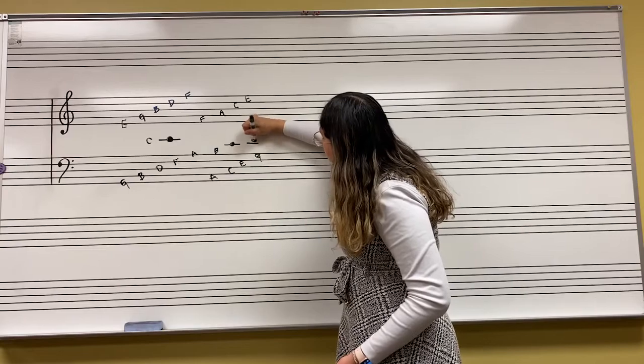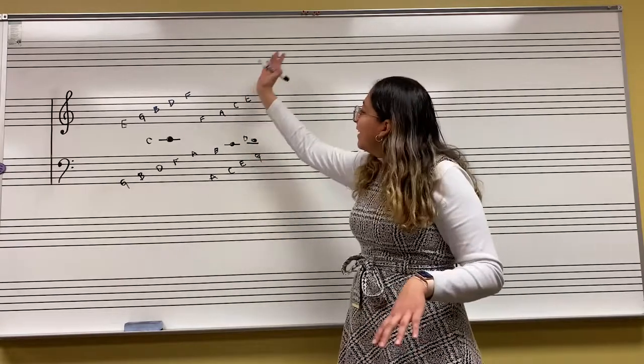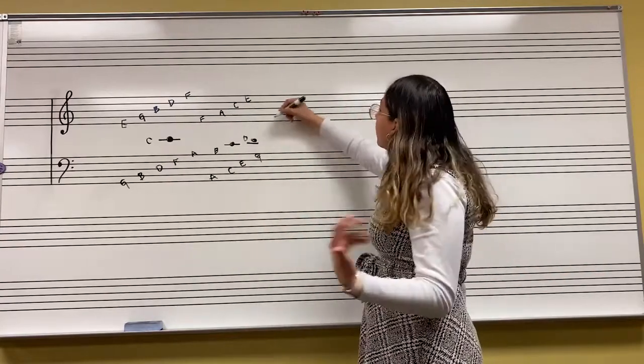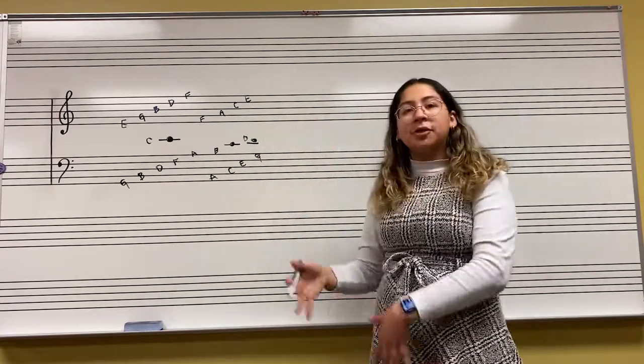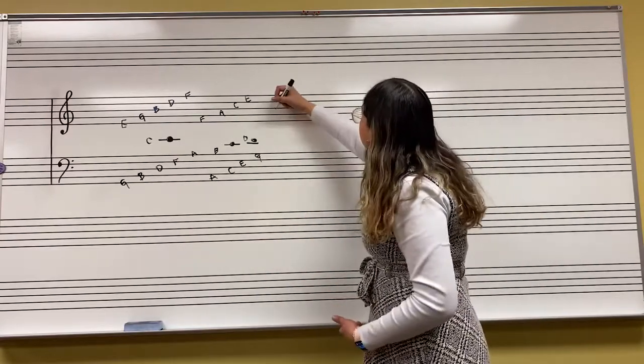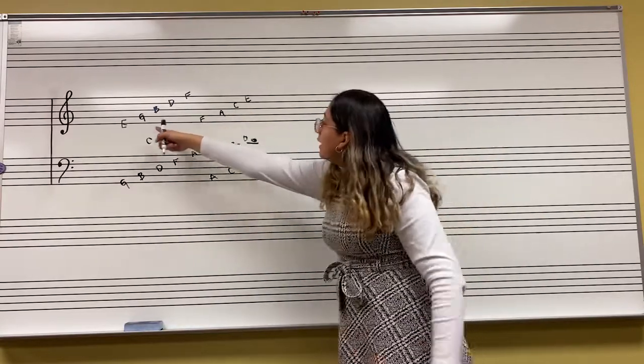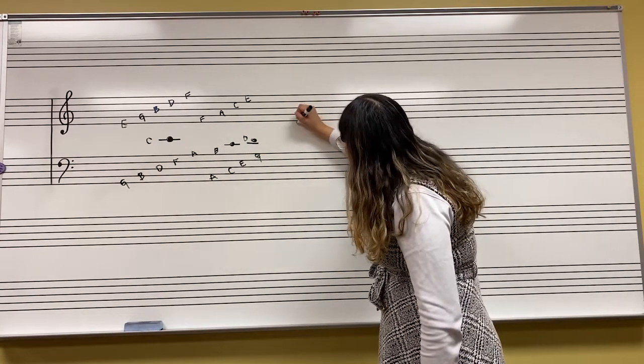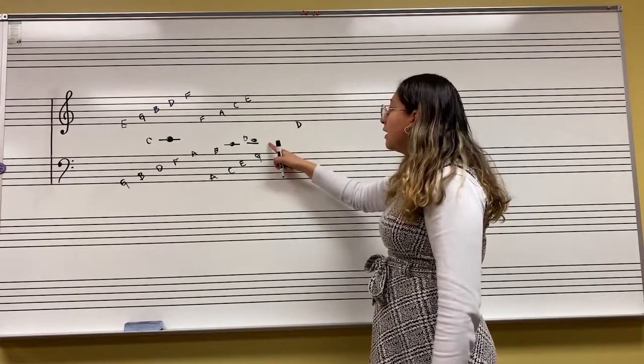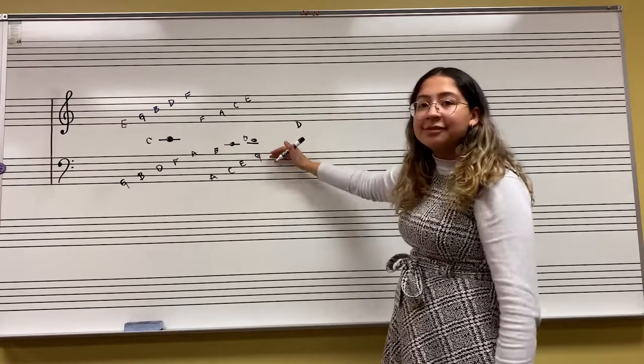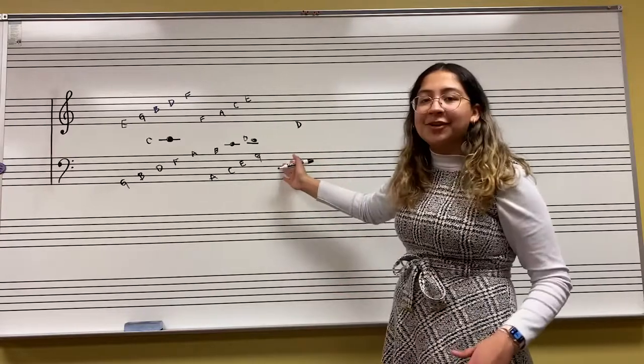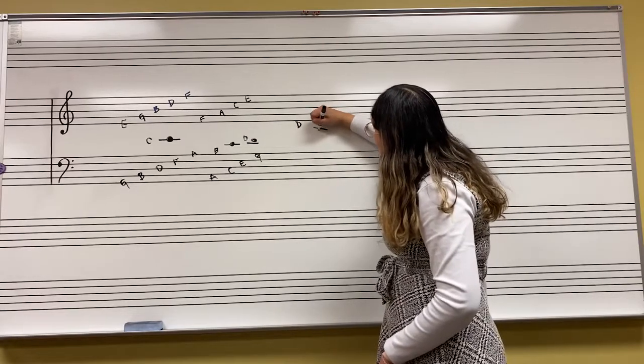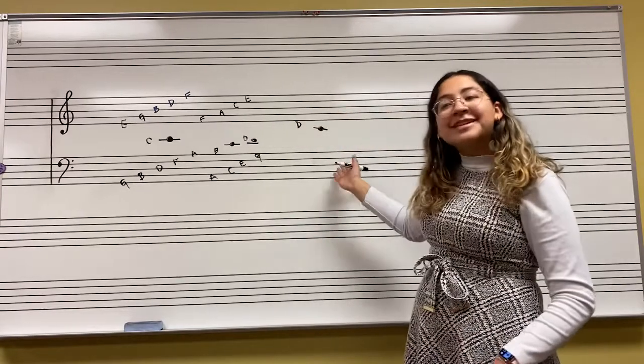And then in treble clef we would be playing these same notes. So let's say we were going down, because to go down to the bass clef we would have to lower our pitches. So instead of an E, which would be this bottom line, we're going to go down one and we're going to get a D right here. And then we go down one more ledger line. This would be middle C, so it appears at the same place in both clefs.